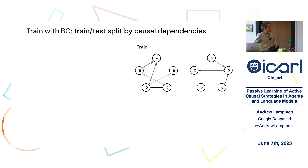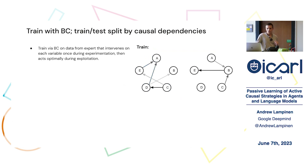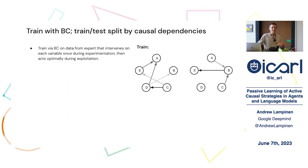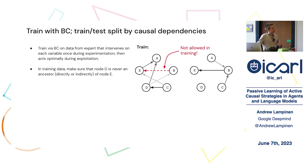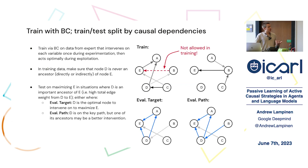We train these agents with behavioral cloning on data generated by an expert policy that intervenes on each variable once during the experimentation phase and takes optimal actions during exploitation — because in these simple structures, intervening on each variable once is sufficient to determine the causal structure. We do a train-test split based on the causal structures allowed: in the training data, node D is never an ancestor of node E. We then test whether the agent can figure out how to maximize E in situations where D is a crucial ancestor of E.